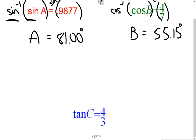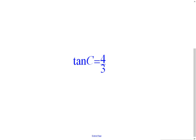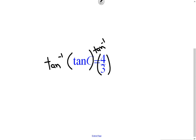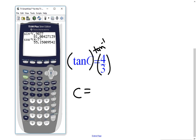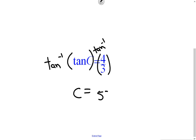Last but not least, we have a tangent equation. To undo tangent, we take the inverse of tangent on both sides — the tangent and inverse tangent cancel each other out, leaving just C. We go back to our calculator, push second then tan, type in the fraction 4/3, and push enter. We find the measure of angle C is 53.13 degrees. We've now calculated three angles using the inverses of sine, cosine, and tangent.